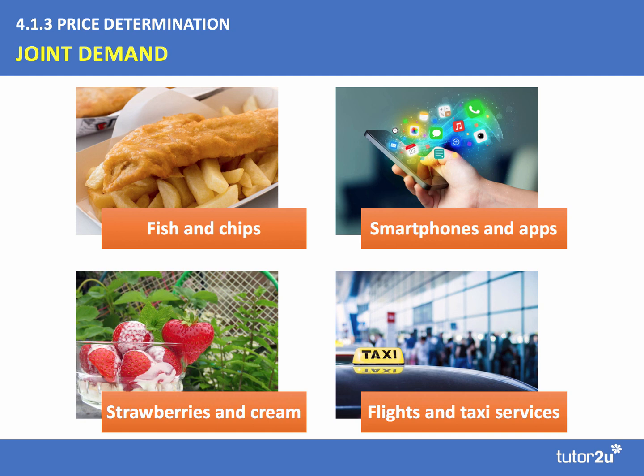A quick reminder that the cross-price elasticity of demand for complements is negative. The price of fish goes down, people buy more fish, and ordinarily they will buy more chips. Another really good example is the market for 3D printers. As we move towards additive manufacturing, the demand for 3D printers is growing, and as more people are buying and installing 3D printers, so too is a kind of joint demand for the materials which 3D printers use to manufacture products.